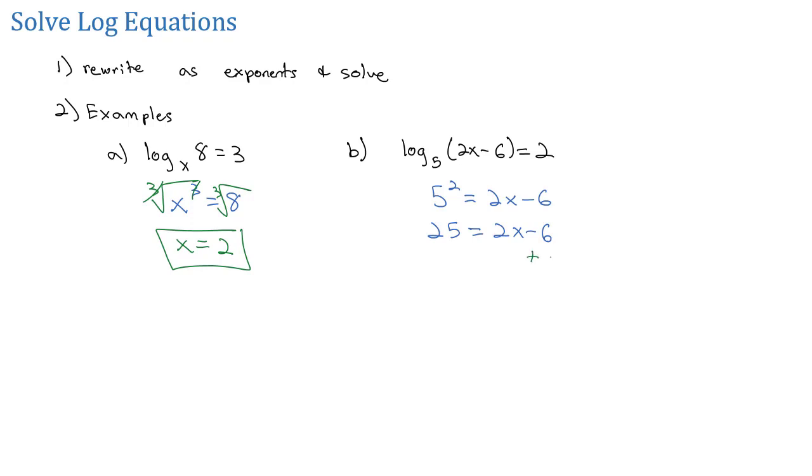Then we can solve by adding 6 to both sides, giving us 31 equals 2x. Finally, dividing both sides by 2, so x is 31 halves, or 15.5.